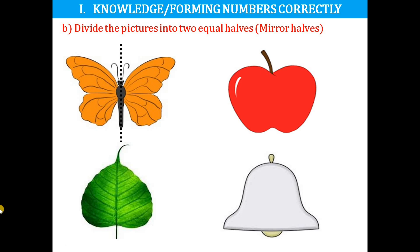A butterfly is divided into two equal halves. Next, an apple is also divided into two equal halves. A leaf is also divided into two equal halves, and a pail is also divided into two equal halves. If we fold these pictures and look at the half part in a mirror, we will see the full picture.